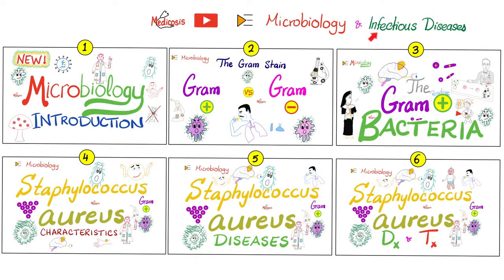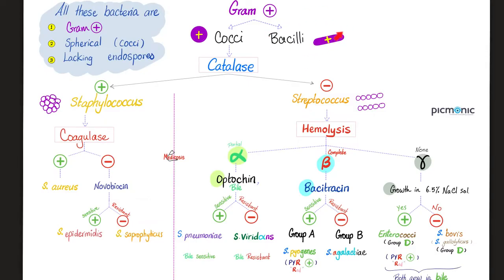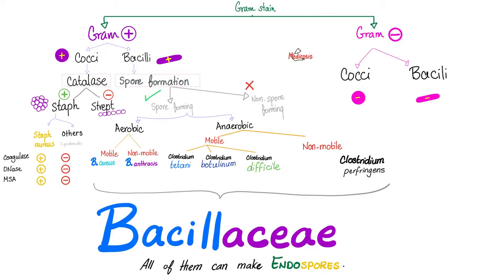This is my microbiology and infectious diseases playlist — please watch these videos in order. Clostridia are gram-positive rods. Are they spore-forming? Yes, they are. Are they aerobic or anaerobic? Mostly anaerobic — mostly strictly anaerobic. They only live, survive, and multiply in the lack of oxygen.